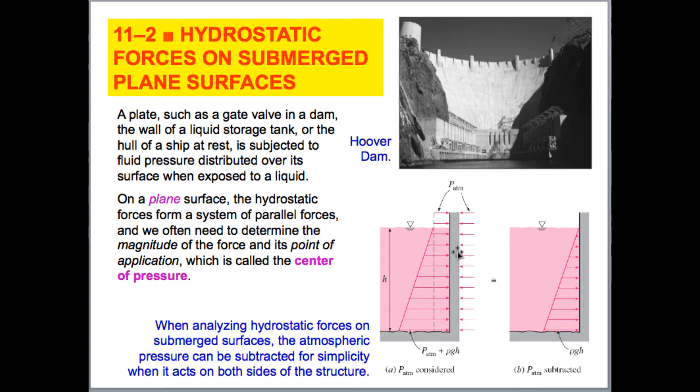So a lot of times we'll look at a gate or some type of wall. And we can often assume that atmospheric pressure acts on both this side of the wall and this side of the wall, helping our analysis be a little bit simpler. If the atmospheric pressure does not act on one side of the wall, we do need to take it into account.